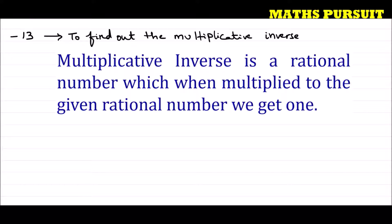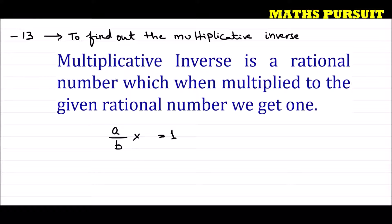For example, if our rational number is a upon b, and multiplicative inverse is a rational number which when multiplied to the given rational number gives us 1 — now a upon b is the given rational number. If we multiply another rational number we will get 1. That means what we should multiply? If we multiply b upon a, then we will get 1.